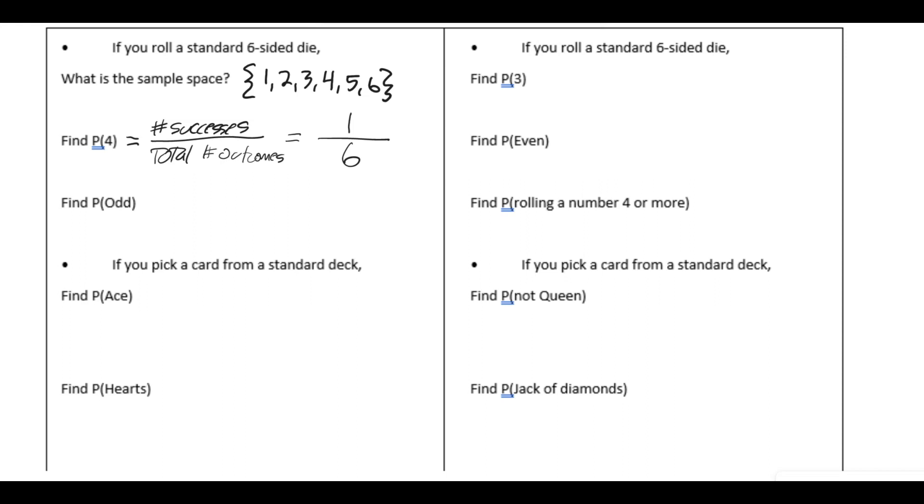Okay. The second one. Find the probability of the roll being odd. Now, again, there's still six total in the sample space. Now, if we look for odd, there's actually three solutions. So the number of successes we can have are three. So the probability is three-sixths. We can reduce that to one-half.